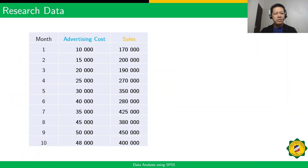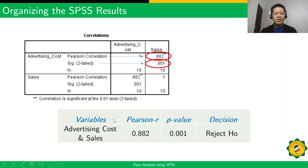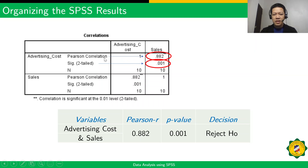We will now look at the SPSS output and organize the data into a table ready for presentation in a thesis paper. The table has columns for variables, the Pearson R value, the probability value, and the decision. We put the two variables — advertising cost and sales. Our Pearson R value is 0.882, and the probability value shown under SIG is 0.001.